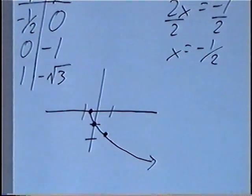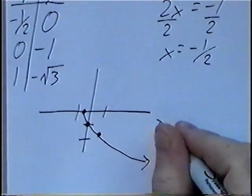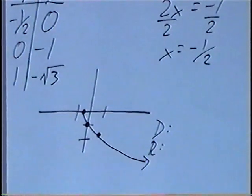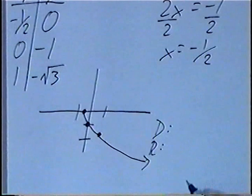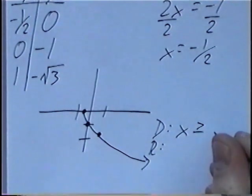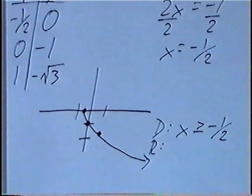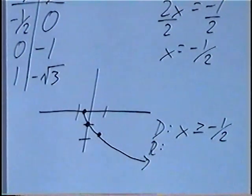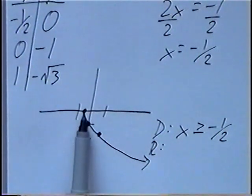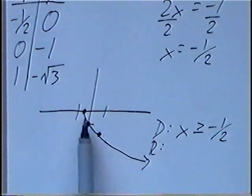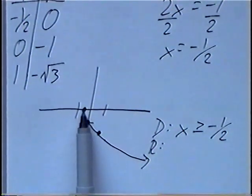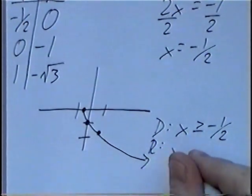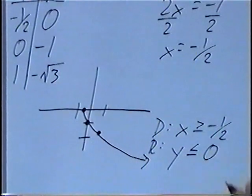The last part of the question is to find the domain and range. The domain is the x values, and the smallest x value is where we started the t-table, which is negative one-half, so all x values have to be greater than or equal to negative one-half. For the range, the critical y value is zero, but this time the y values go down including the negative numbers and do not include the positive numbers. Zero is the maximum point, so the y values have to be less than or equal to zero.